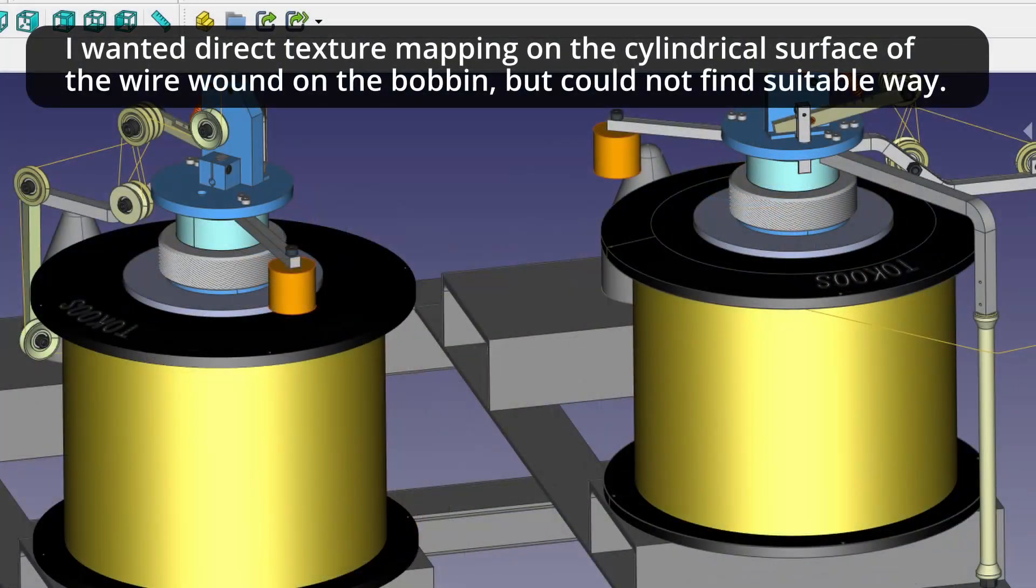I wanted direct texture mapping on the cylindrical surface for the wire wound on the bobbin, but could not find suitable way.